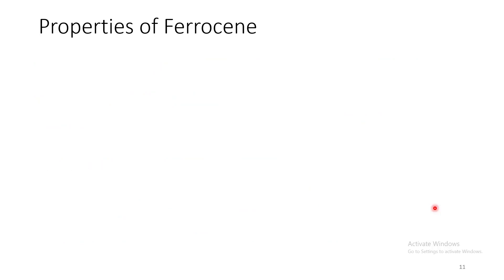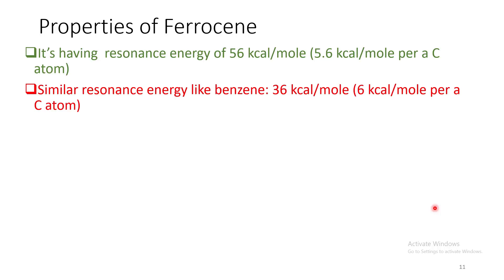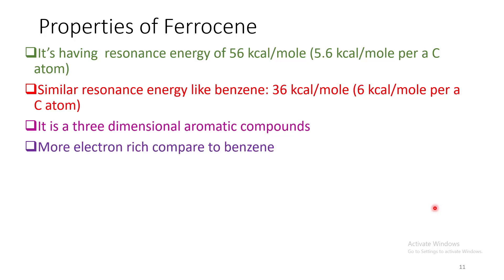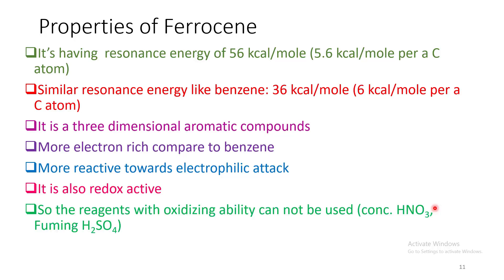Now let us come to some properties of ferrocene. It is having a similar aromaticity like benzene. But unlike benzene, it is a three-dimensional aromatic compound. Here two cyclopentadienyl ligands, they communicate through iron and they undergo a three-dimensional electronic delocalization. Due to presence of negative charge in the Cp rings, they are much more electron-rich compared to benzene. So they are more reactive towards electrophilic attack than benzene. But due to their redox activity, the reagents with oxidizing ability cannot be used. For example, nitric acid, fuming sulfuric acid.